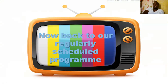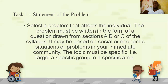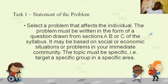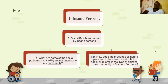For the statement of problem, select a problem that affects the individual. The problem must be written in the form of a question drawn from sections A, B, or C of the syllabus — from family all the way up to resources. If you have a book called Modules in Social Studies, that's a good book; it has a lot of SBA ideas in the middle and a sample SBA, so you can pick from those.